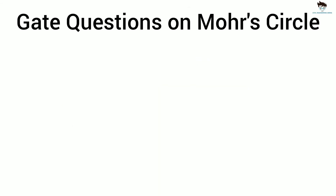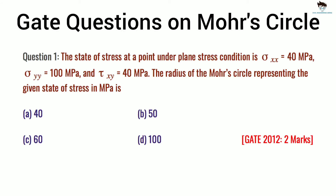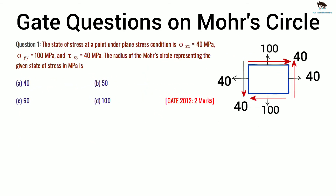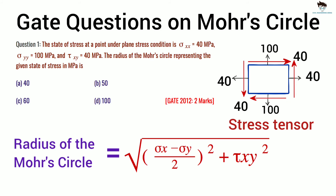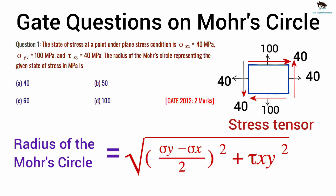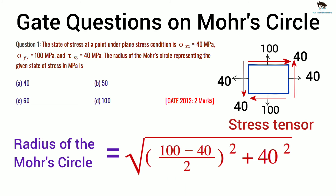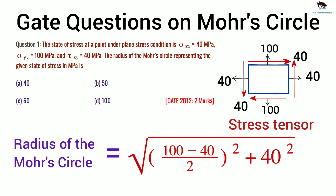Let's see numerical examples from previous year GATE question papers. The first question is from GATE 2012: the state of stress at a point under plane stress condition is σxx = 40 MPa, σyy = 100 MPa, and τxy = 40 MPa. Find the radius of the Mohr's circle. Since σyy is greater than σxx, the formula is adjusted accordingly. Substituting the values, the radius of the Mohr's circle works out to 50 MPa.